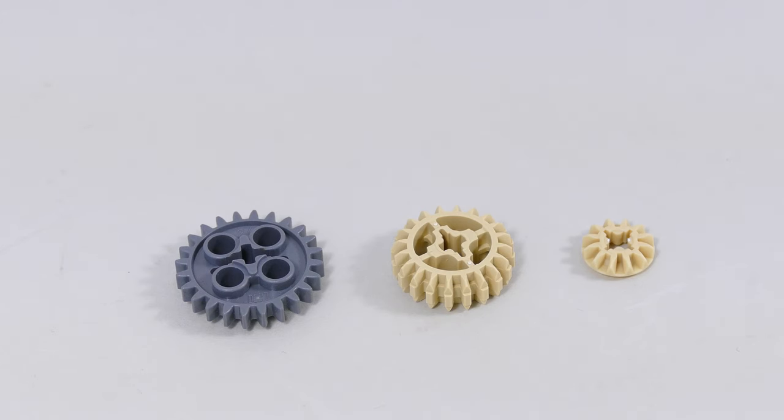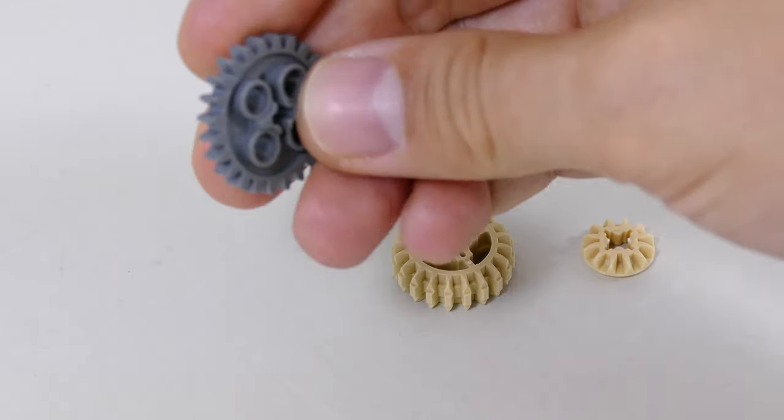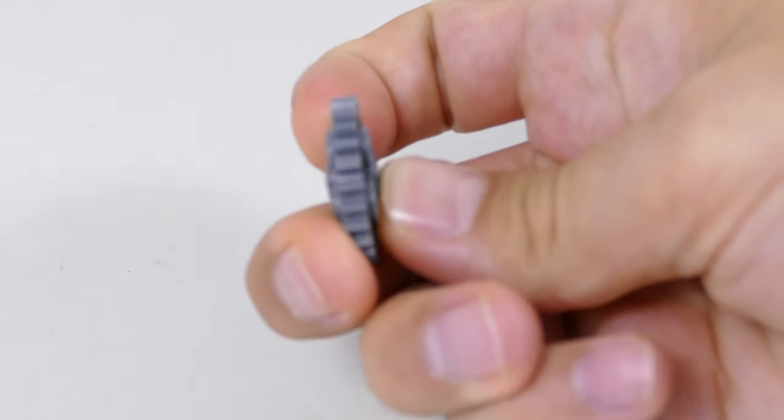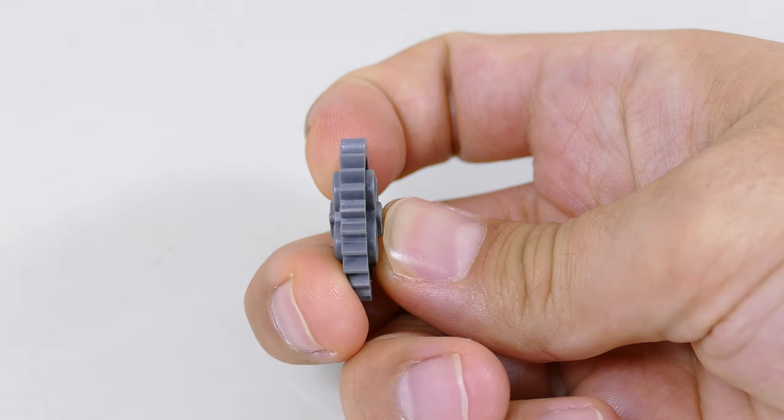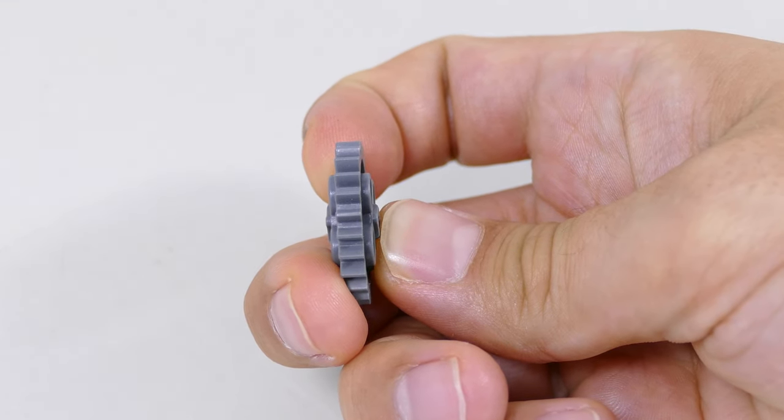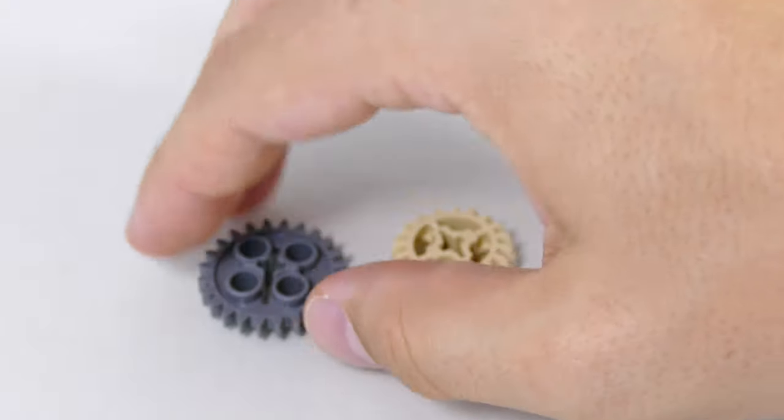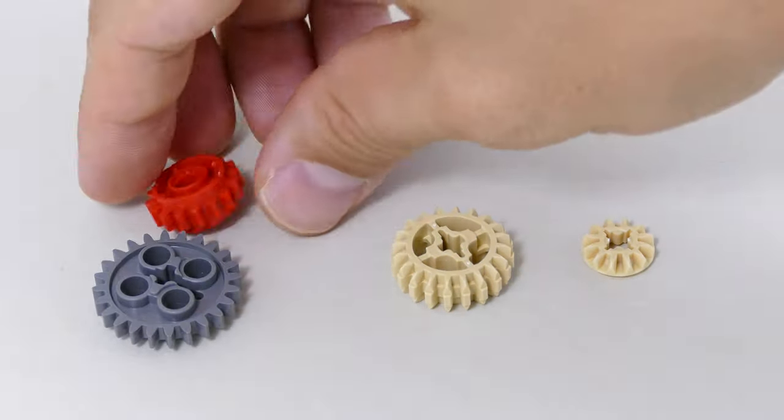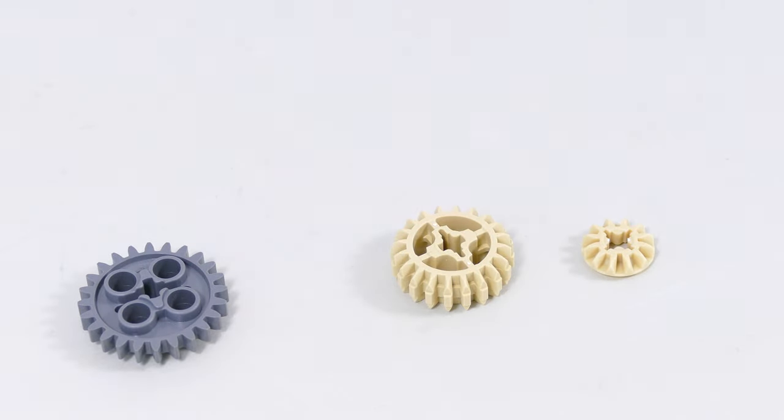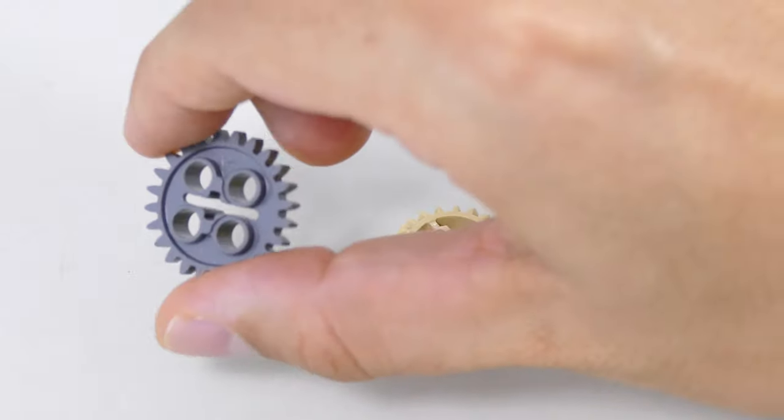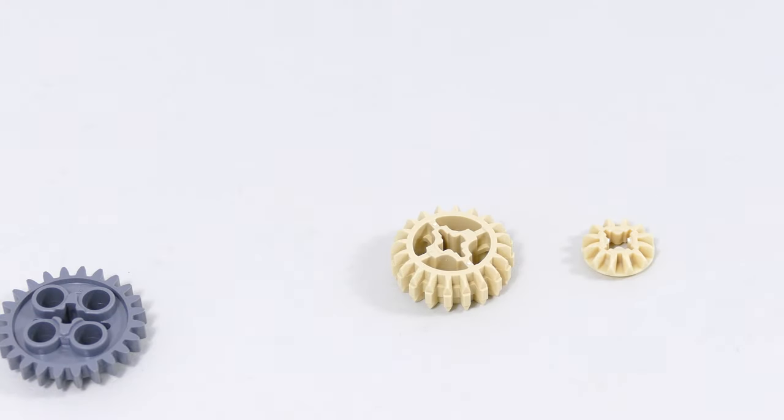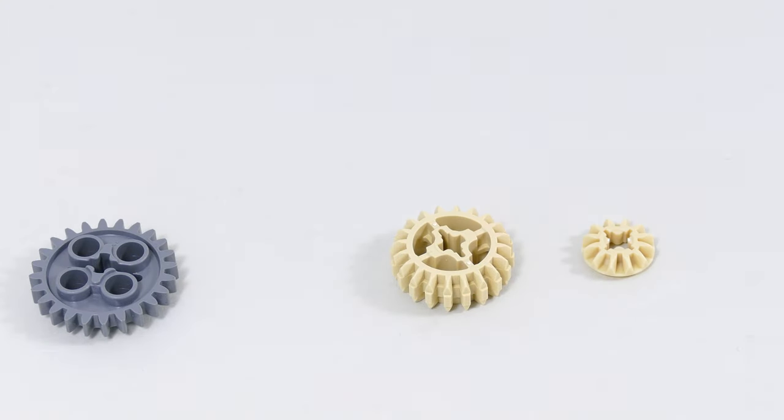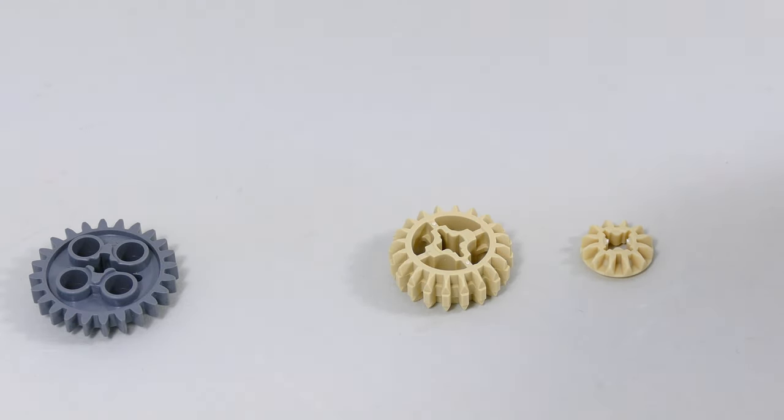First of all we have two basic families of the gear wheels. The oldest ones are the ones that have the teeth that have a straight profile and they are only intended to run in a single plane next to each other like this and these are called spur gears. One of them is the 24 tooth gear wheel, the 8 tooth, the 16, etc and the 40 tooth gear wheel as well.